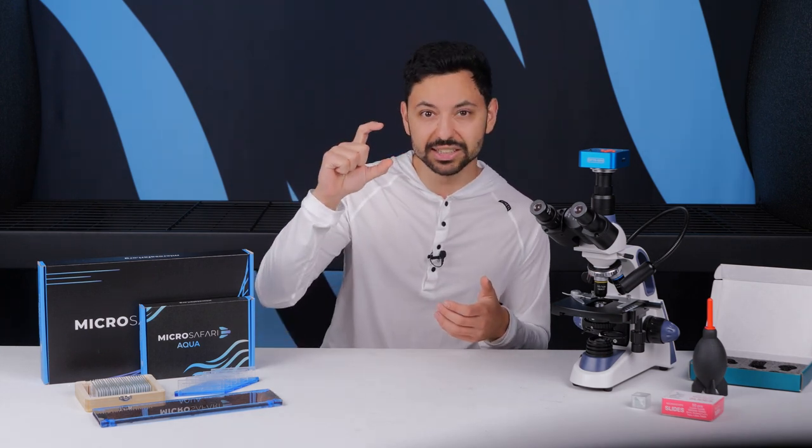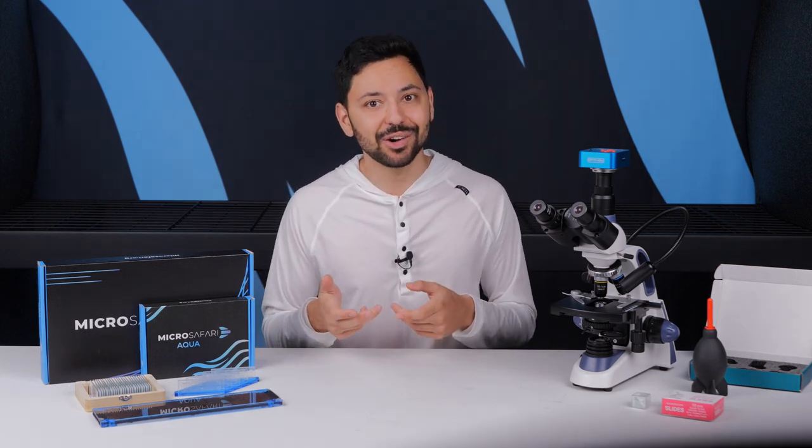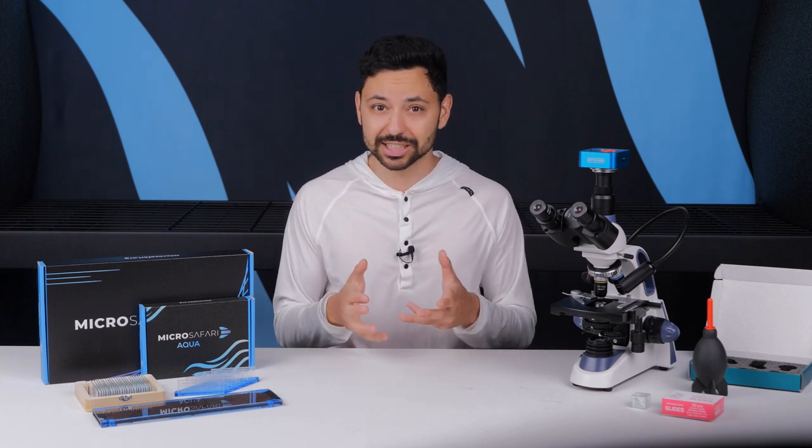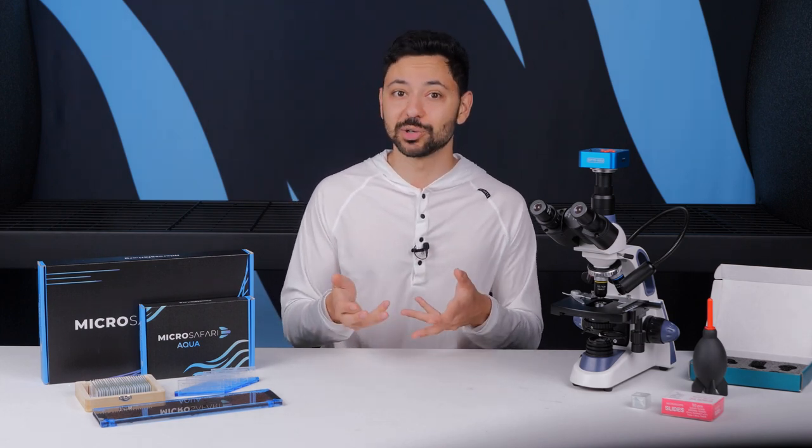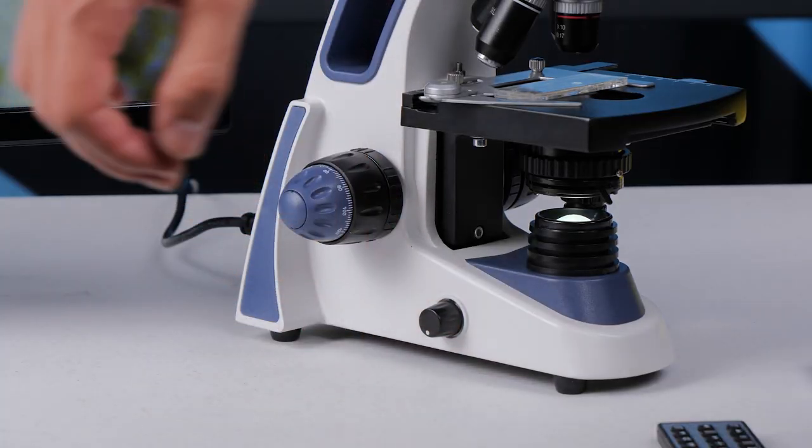You'll also note that changing the iris changes the brightness of the image, although you typically don't really want to use the condenser to change the brightness if possible. That job goes to the brightness adjustment knob located on the side of the microscope.